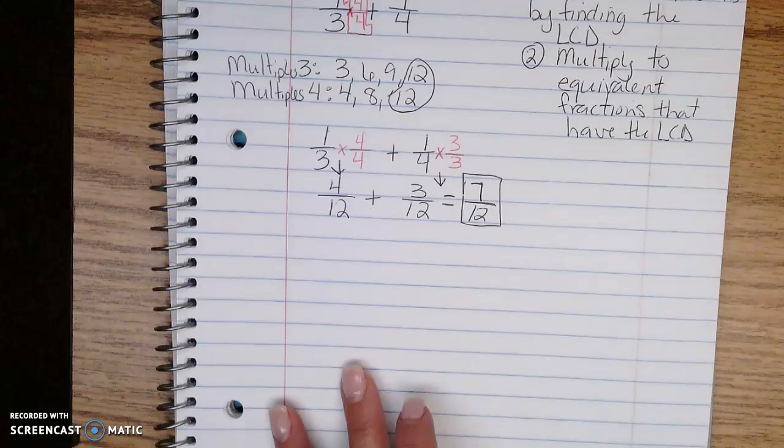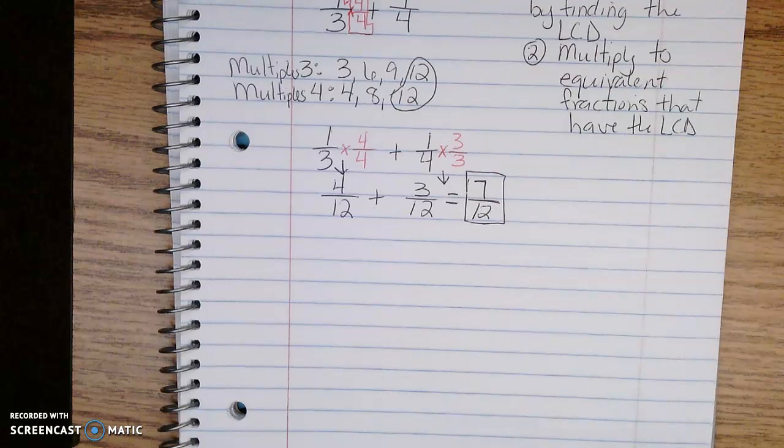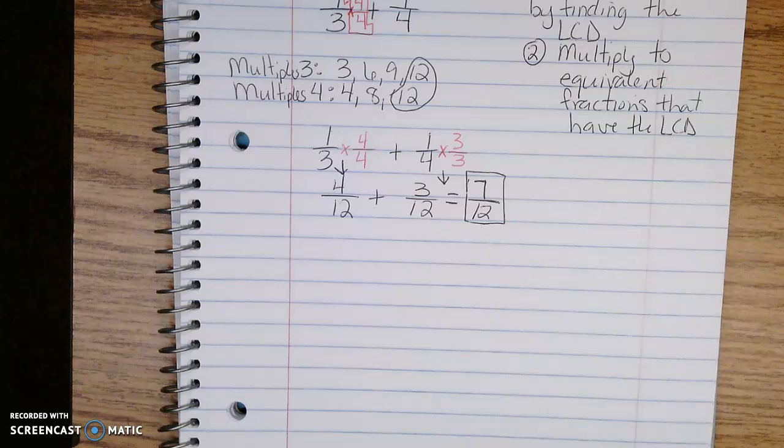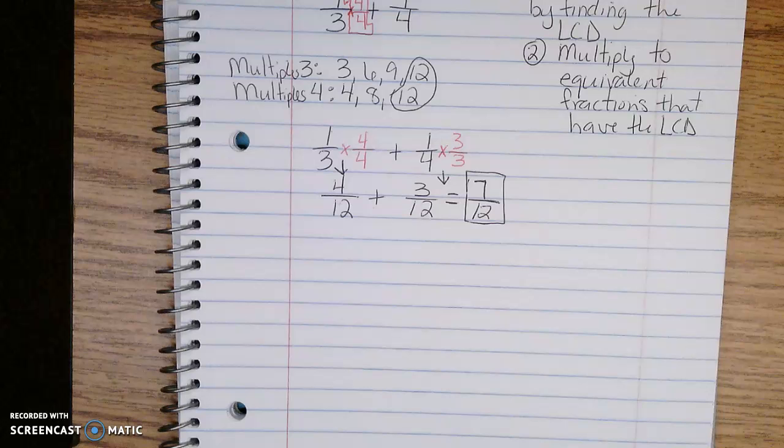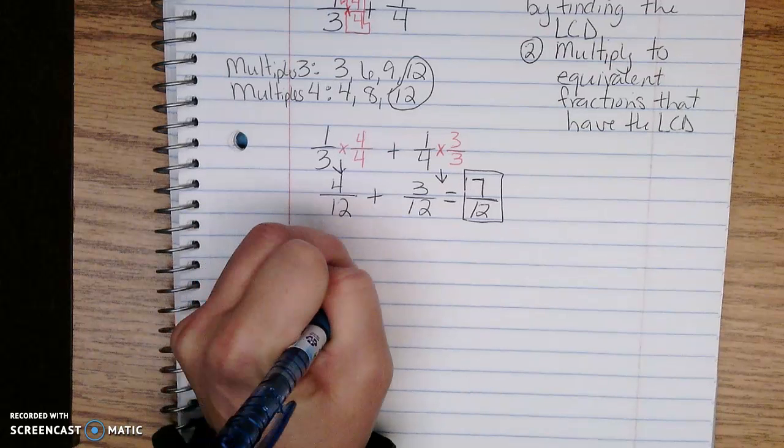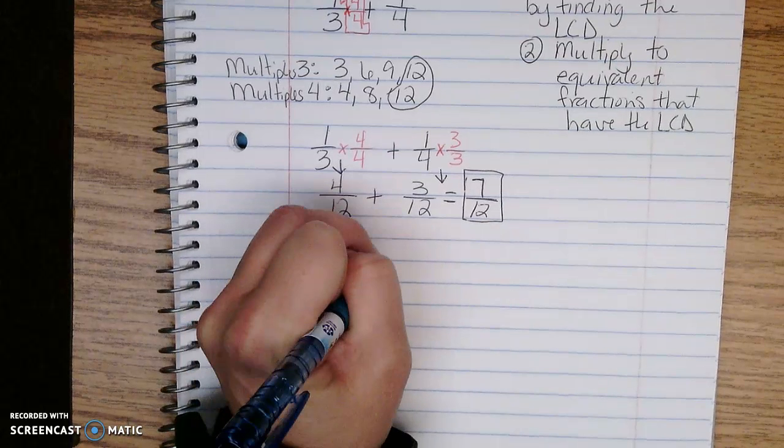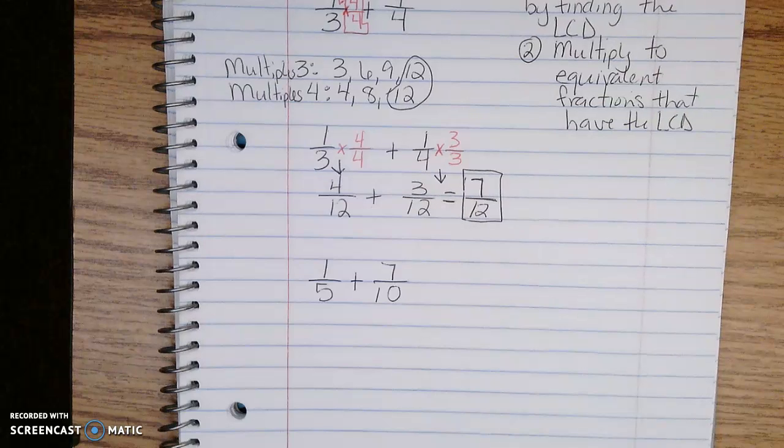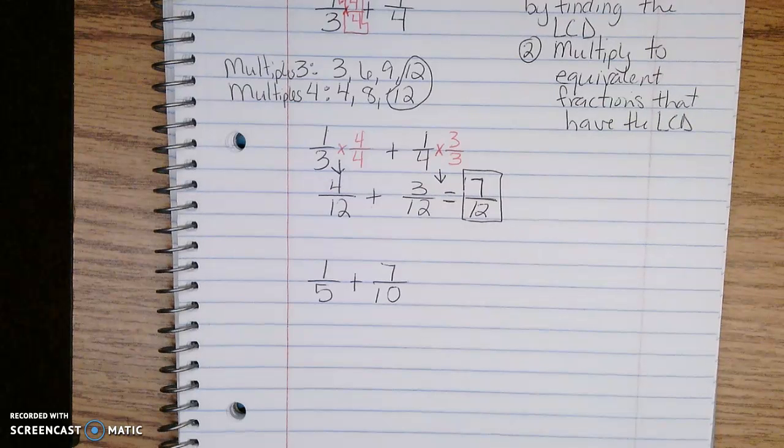Example 2 on the next page says: Catalina spent one-fifth of her free time reading and seven-tenths of her free time practicing her flute. What fraction of her free time did she spend reading and practicing her flute? That is adding 1/5 plus 7/10. I do not have like denominators.